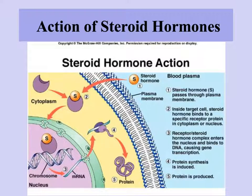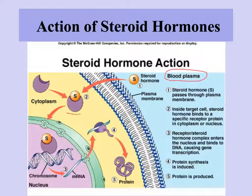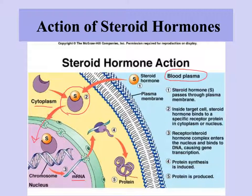Steroid hormones are fat-soluble so they can move through the cell membrane. They're carried in the blood plasma weakly bonded to another protein, which allows them to travel through the water-based medium. When a steroid hormone reaches the target cell it moves through the cell membrane, is picked up by a receptor protein in the cytoplasm, and the hormone-receptor complex moves into the nucleus. Once there, it binds to DNA and triggers transcription of a particular gene, producing mRNA that moves to the cytoplasm for translation, resulting in a protein. So steroid hormones physically enter the cell, enter the nucleus, and trigger expression of a particular gene.